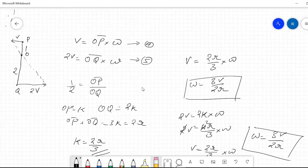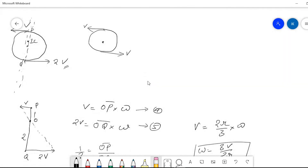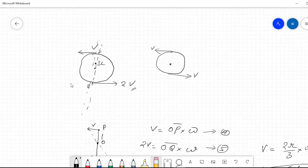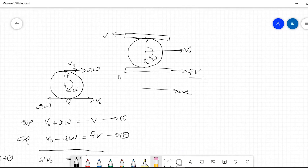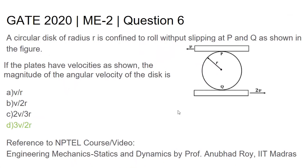You have to solve the question in a very short time. Therefore, the answer to this question — a circular disk of radius r is confined to roll without slipping at P and Q as shown in the figure — is option D: 3v/2r. For more concepts and information on this topic, you can also refer to the NPTEL course Engineering Mechanics: Statics and Dynamics by Professor Anubad Roy from IIT Madras.